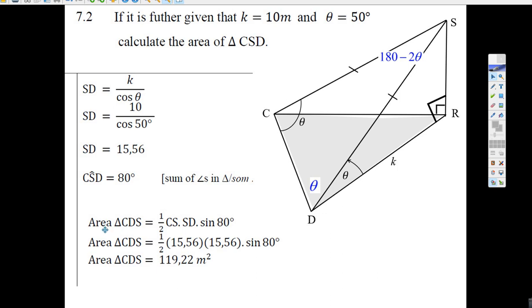Now we've got the area rule in our formula sheet. One half, two sides - CS and SD are both the same, so it's 15.56. We multiply them together times the sine of the angle in between them. Put that in the calculator and we get 119.22 square meters.